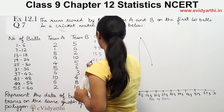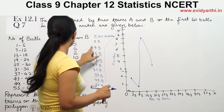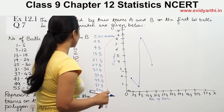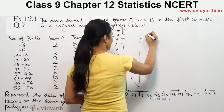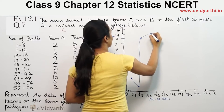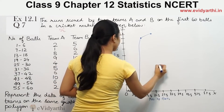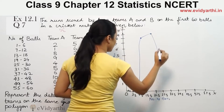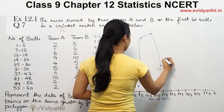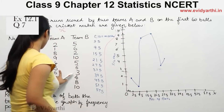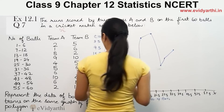Continuing Team A's plot: at 27.5 frequency is 4, at 33.5 frequency is 5, then at 39.5 frequency is 6, at 45.5 frequency is 10, and at 51.5 frequency is 6.